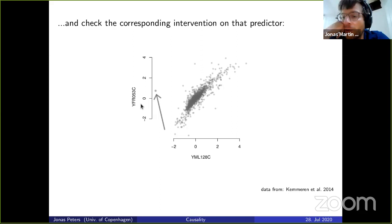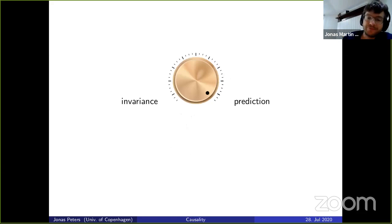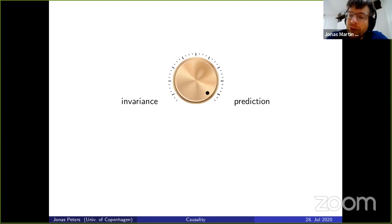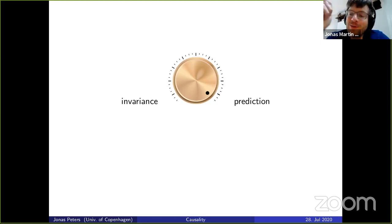So this simple principle of choosing the strongest correlation doesn't work. The idea of the next method is based on invariance. Instead of focusing on strong correlations or prediction, you can exploit the fact that many conditionals remain the same under intervention.